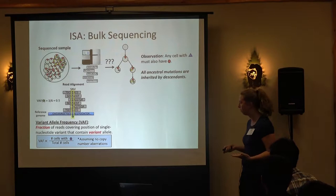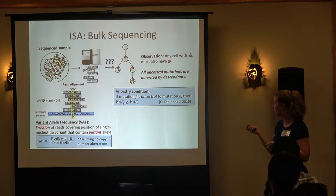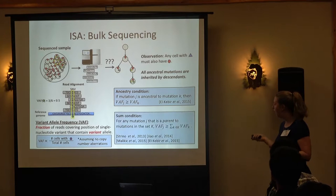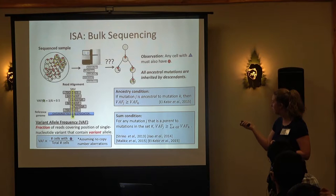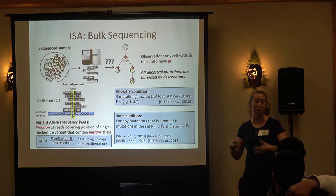Once we realize that, we can start putting together relationships between ancestral histories. The ancestry condition tells us: if mutation J is ancestral to mutation K, it has to have a higher variant allele frequency. We can generalize this to the sum condition — the set of mutations that are children of a mutation together must have a sum of their variant allele frequencies less than their parent. These relationships allow us to say that knowing variant allele frequencies might tell us something about potential ancestral relationships, though it's not perfect.